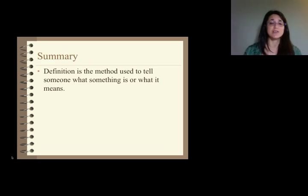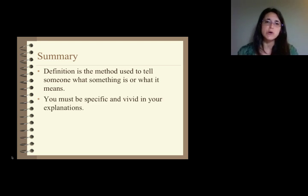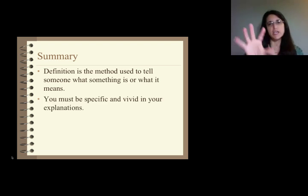Definition is the method used to tell someone what something is or what it means. We have to remember to be specific and vivid in your explanations because you are creating an image for your reader. You're creating an image so that your reader can see what you see, and you have to be specific and vivid. I could say that soccer is a sport that uses a ball, and you as a soccer player may see a field and grass and a black and white ball and shorts and tank tops. But if someone has never seen soccer before, then they're probably just going to picture their most common sport with a ball. It might be American football, it might be croquet, it might be badminton. We have to be very specific and vivid in what we're saying so that our reader can see the same thing that we are seeing.